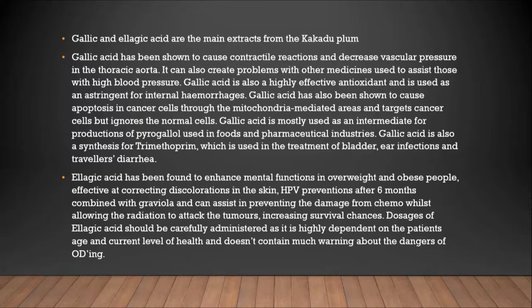Gallic acid has been shown to cause contractile reactions and decrease vascular pressure in the thoracic aorta. It can also create problems with other medicines used to assist those with high blood pressure. Gallic acid is also a highly effective antioxidant and is used as an astringent for internal hemorrhages.